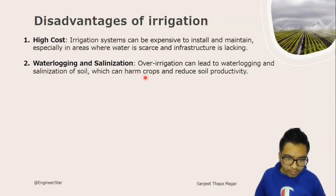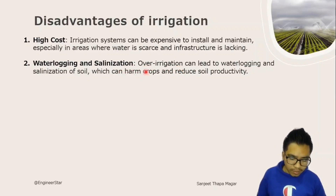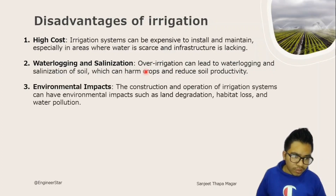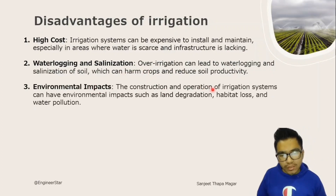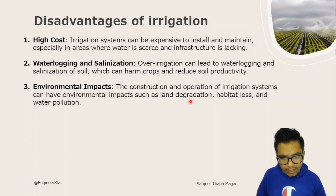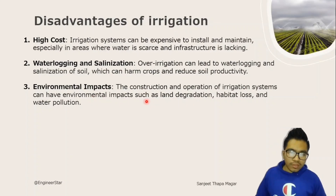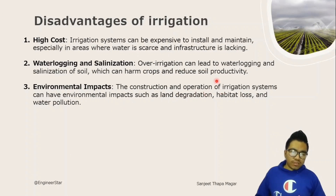Environmental impact is another disadvantage. The construction and operation of irrigation systems can have environmental impacts such as land degradation, habitat loss, and water pollution.